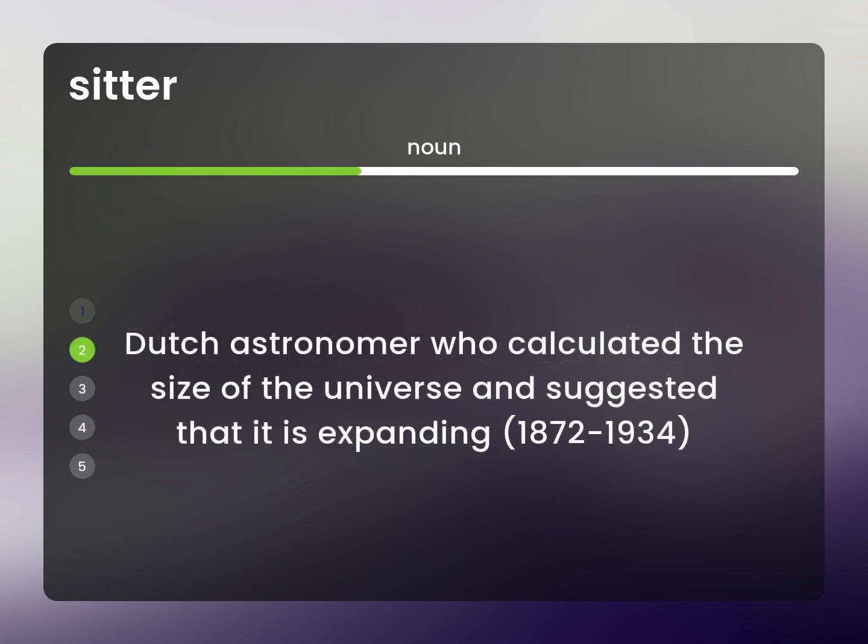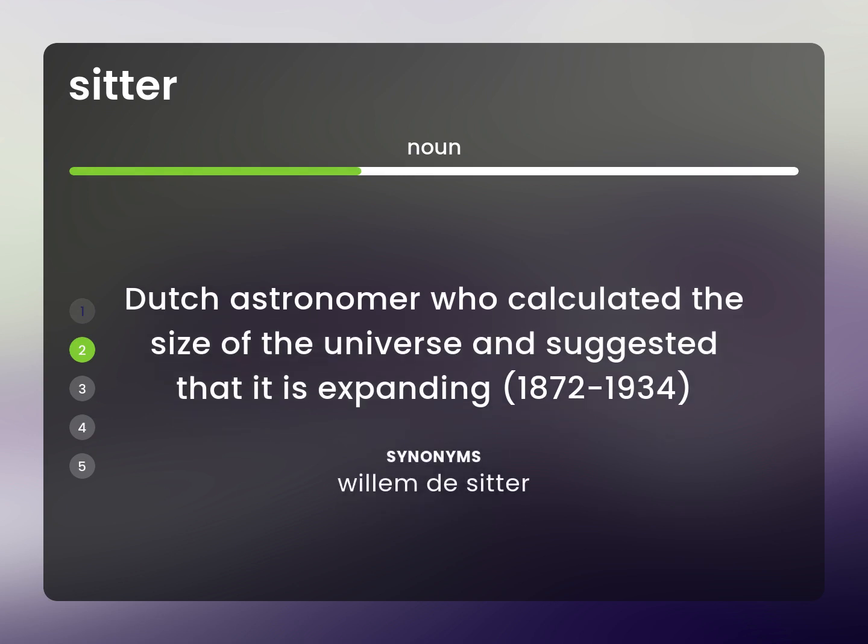Dutch astronomer who calculated the size of the universe and suggested that it is expanding. 1872 to 1934. Willem de Sitter.